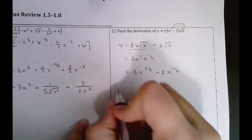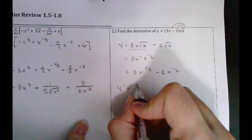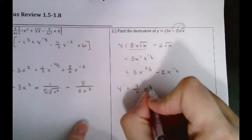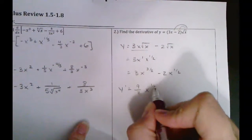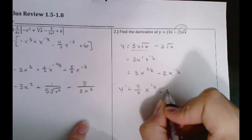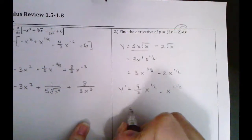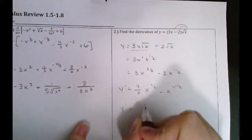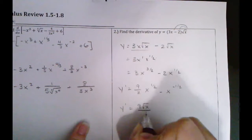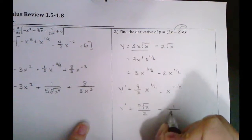Now when we find the derivative, we can just use the power rule. So three halves times three is nine over two, times x — and then you subtract one from the exponent, so that's just going to be one half. And here we're going to have minus one x to the negative one half. So if we rewrite this, this will be nine root x over two, and then this will be minus one over the square root of x.